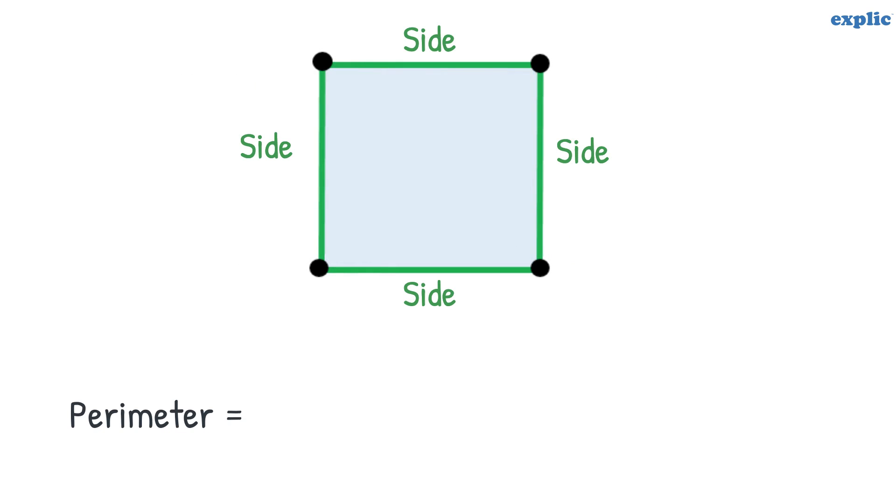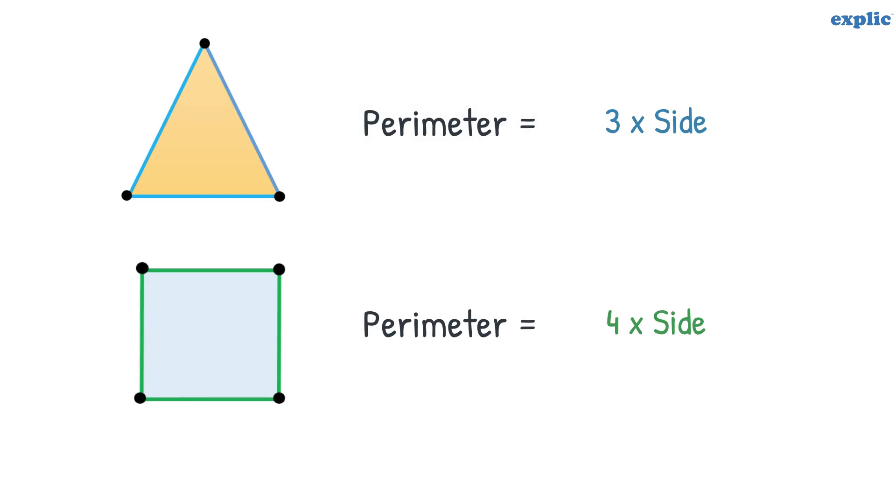Similarly, to find out the perimeter of a square, add the side of the square 4 times. The perimeter of an equilateral triangle is 3 multiplied by the length of the side and the perimeter of a square is 4 multiplied by the length of the side.